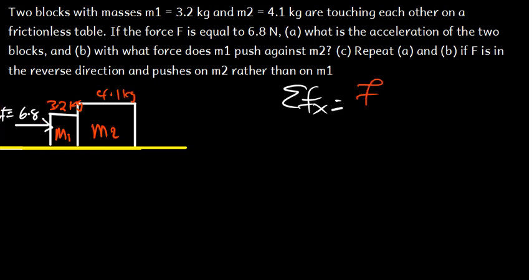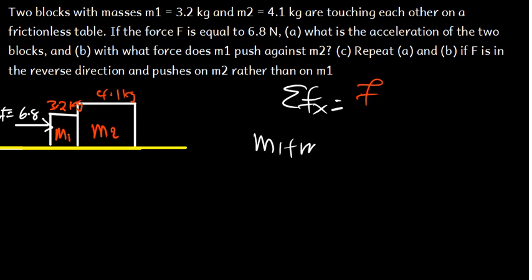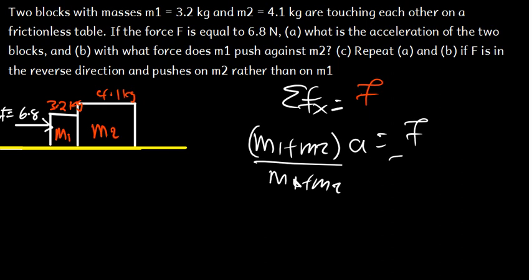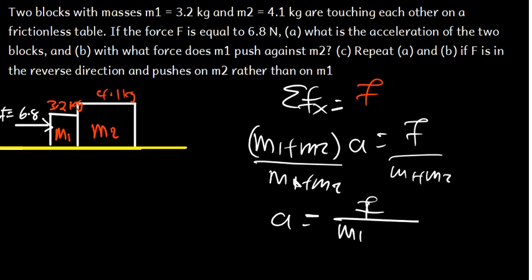We have the applied force. According to Newton's second law, we replace the right side with mass times acceleration. In this case, we have two masses, M1 and M2, so we say it's going to be (M1 + M2) times the acceleration, equal to the force. We can divide both sides by M1 + M2, so acceleration equals force divided by (M1 + M2).